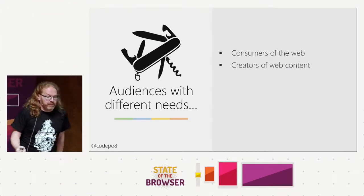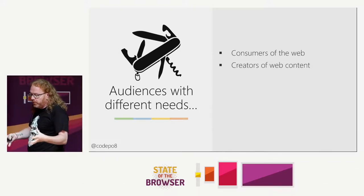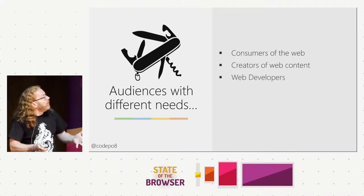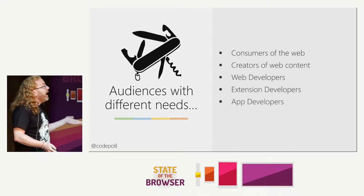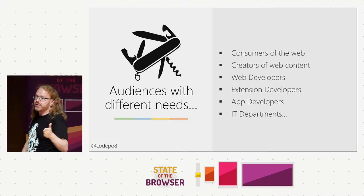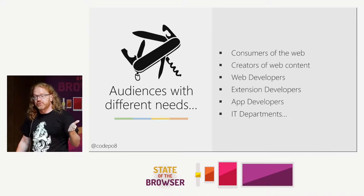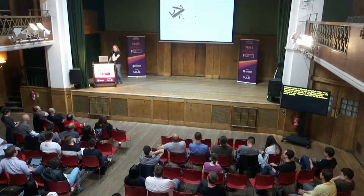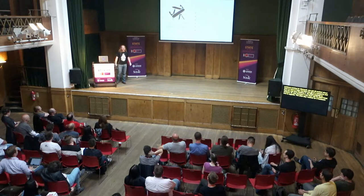Creators of web content want to make sure what they build won't break in a new browser — we've done that since 1997. Then there are web developers, extension developers, app developers, and IT departments. One of my biggest problems working for Microsoft: you get excited about Edge, go to a company, and they say 'we only have Windows 7, we didn't upgrade to 10.' We worked with a hardware maker and updated 1.2 million computers in England to Windows 10 — that was a great feeling, but it was seven months of work convincing them it was a better way to save money.